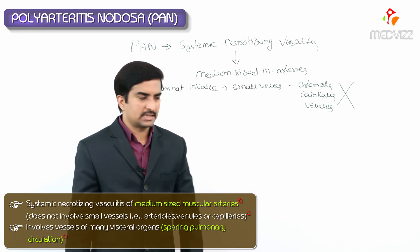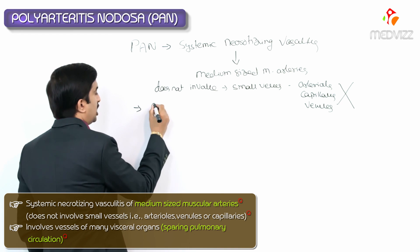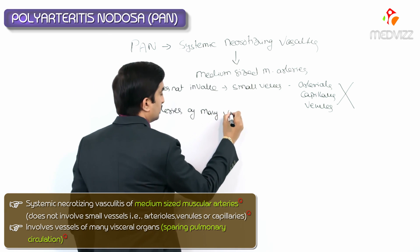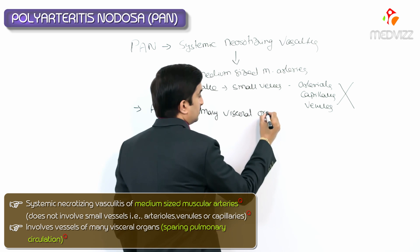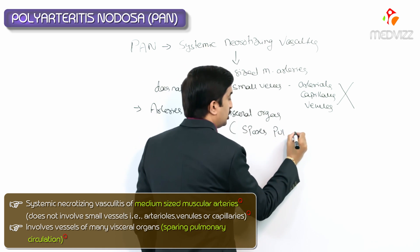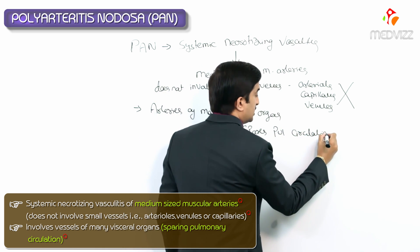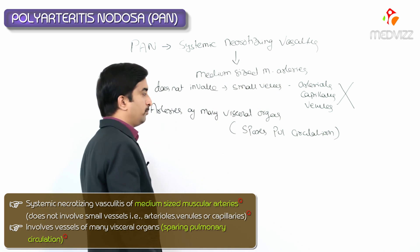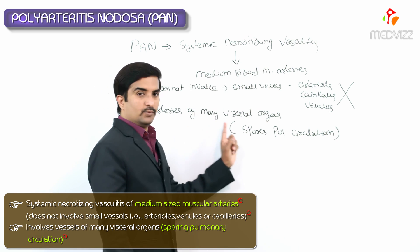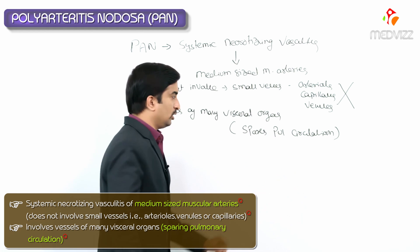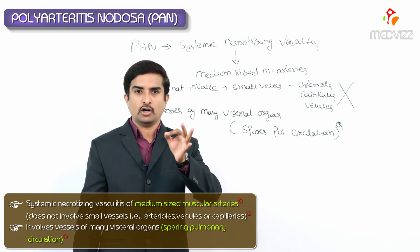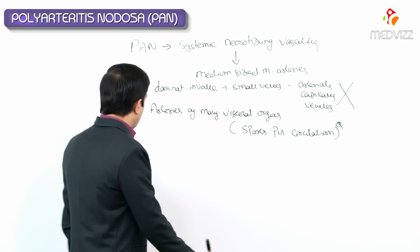PAN affects the arteries of many visceral organs but spares the pulmonary circulation. This is an important characteristic feature and MCQ point — the pulmonary vessels are not involved in Polyarteritis Nodosa.